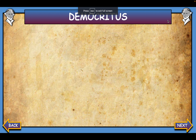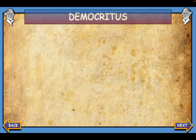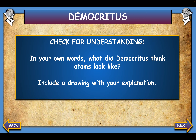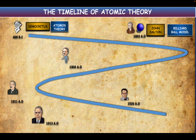Yesterday we talked about Democritus. If you're not understanding Democritus because you didn't watch that video, please watch it. As a review: Democritus thought that atoms of different materials looked like those materials, just in smaller sizes. He said they were small and indivisible, which is why he called them atomos—because atomos means indivisible. Look at the timeline and notice how much time passed between Democritus's atomos theory and John Dalton's billiard ball model. We talked about why so much time passed: they didn't have the technology to test their theories about the atom.